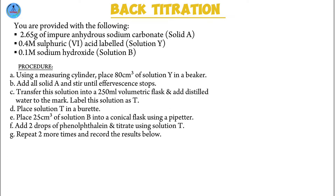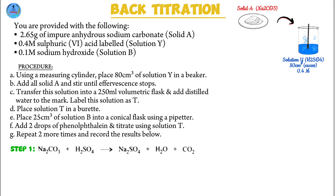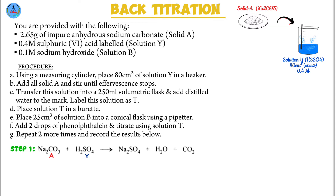Starting with step one: using a measuring cylinder, place 80 cubic centimeters of solution Y — sulfuric acid — in a beaker. This 80 cubic centimeters is going to be in excess. Then add all of solid A, which is sodium carbonate, and stir until effervescence stops. Sodium carbonate reacts with sulfuric acid to form sodium sulfate, water, and carbon dioxide. We stir to speed up the reaction, and stop when effervescence — bubbling — stops, meaning carbon dioxide is no longer being produced.